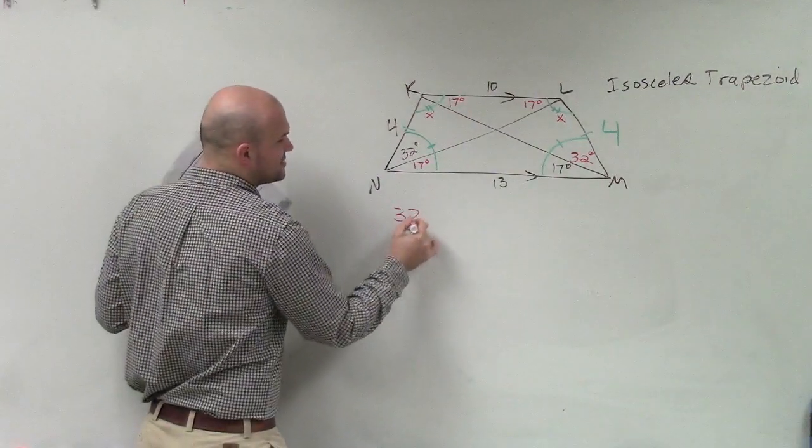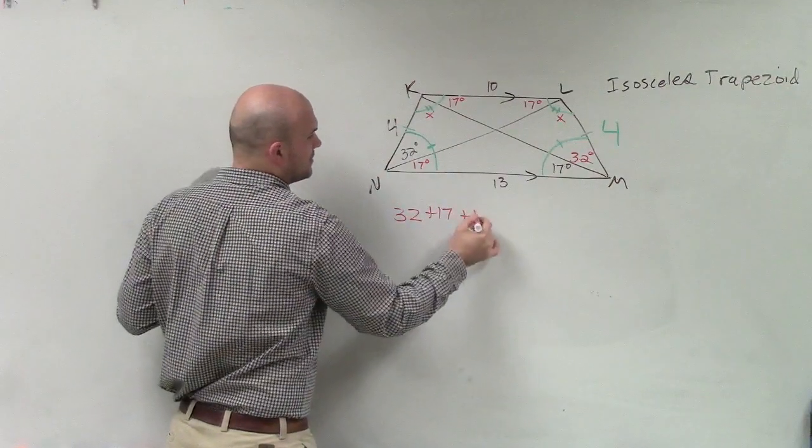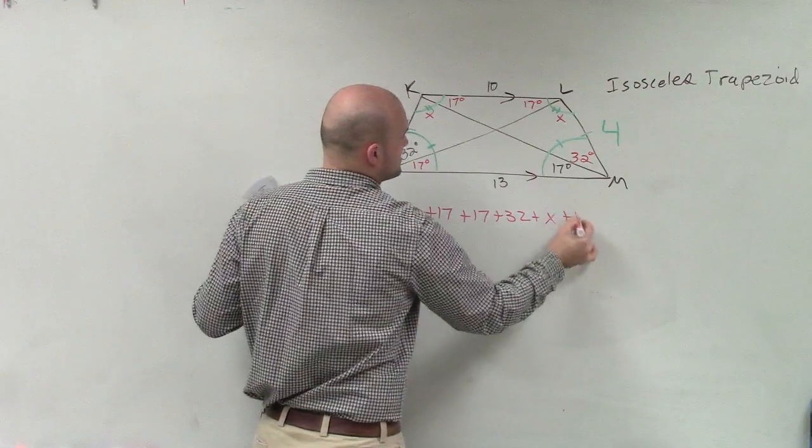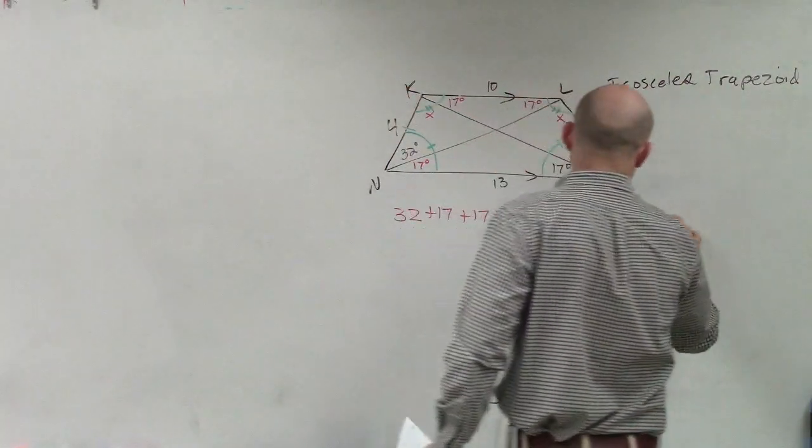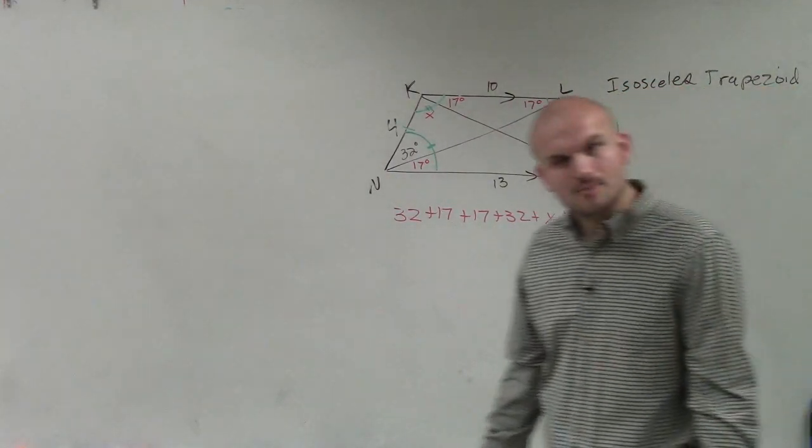So one thing I could even write, guys, I'm just thinking of it. I could say 32 plus 17 plus 17 plus 32 plus x plus 17 plus 17 plus x equals 360. All right, you could add up all those.